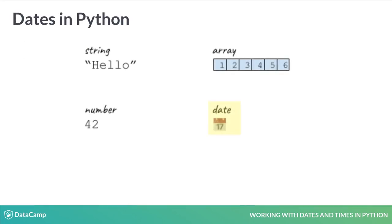Let's begin. Python has a special date class called date, which you will use to represent dates. A date, like a string or number or numpy array, has special rules for creating it and methods for working with it. In this lesson, we're going to discuss creating dates and extracting some basic information out of them.